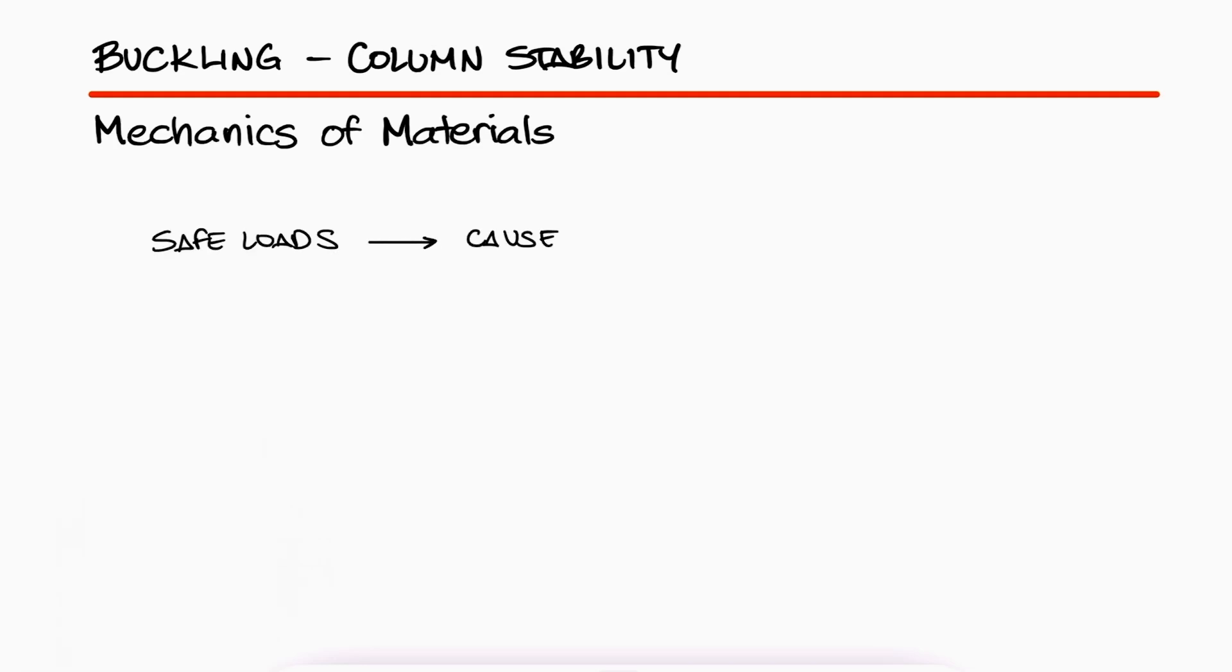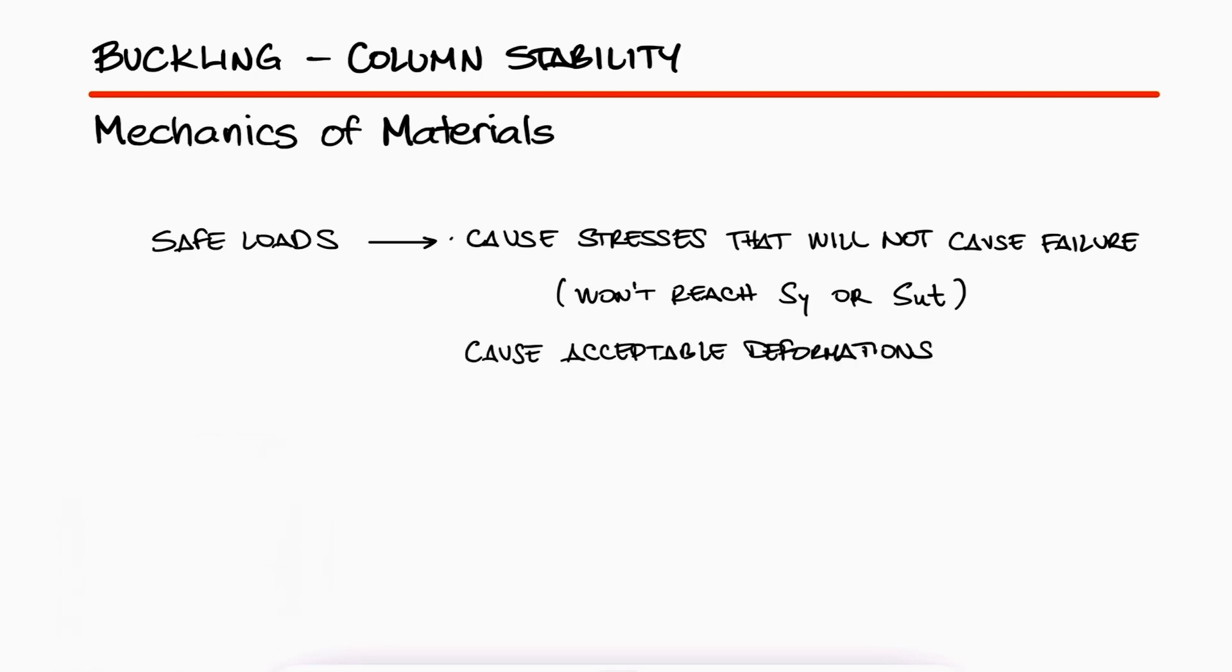Safe loads on a part generally mean that the stresses caused by them will not overcome the material properties, like the yield strength or ultimate strength, and that the deformations caused by them will not be excessive.